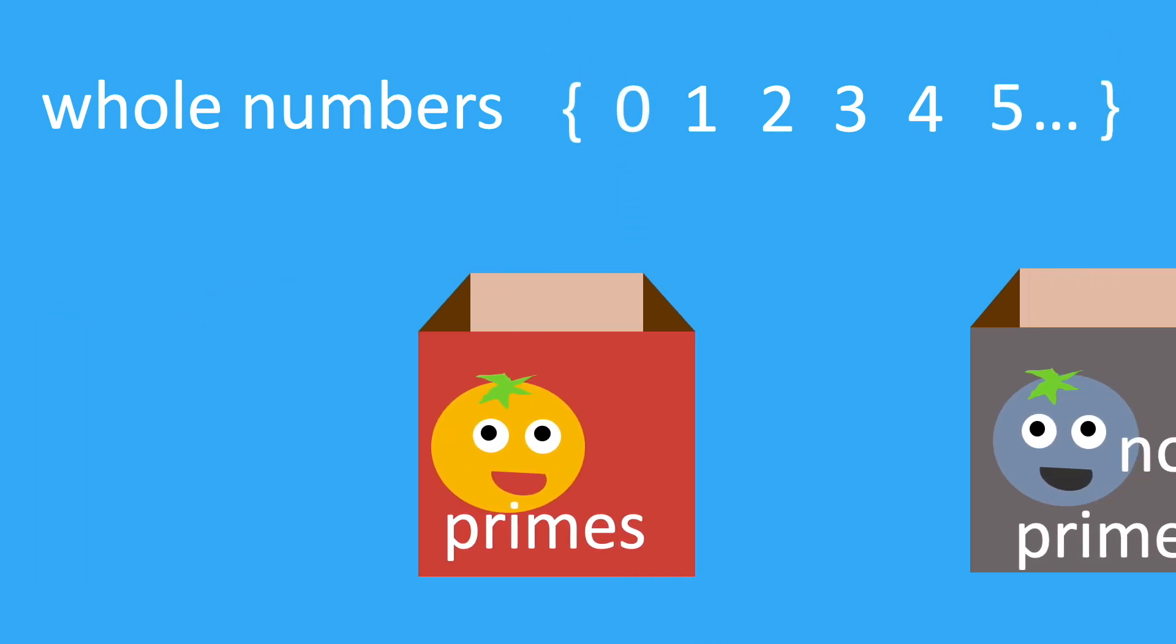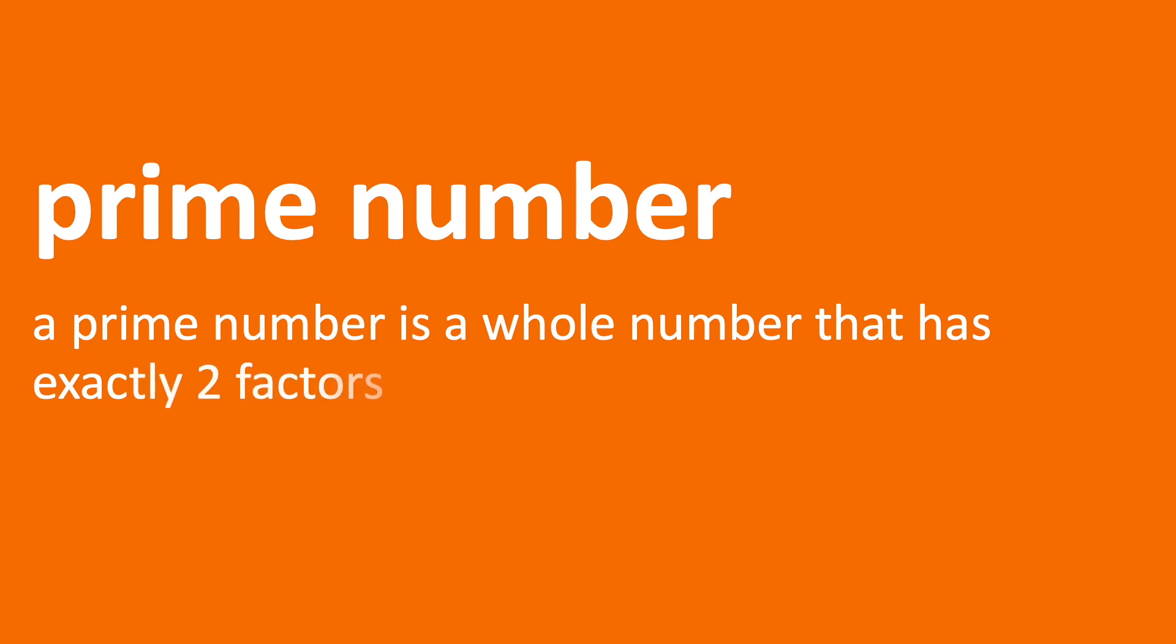But what's the best way to define a prime number, and how do we find them? We can classify whole numbers, that's the positive counting numbers along with the number zero, as being prime or not based on the number of factors. A prime number has exactly two factors, itself and one.